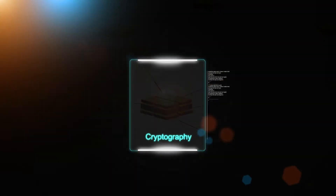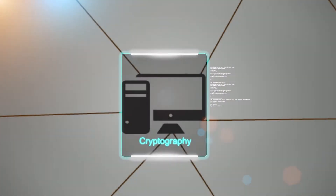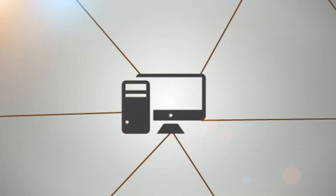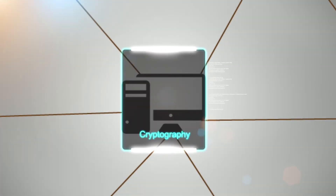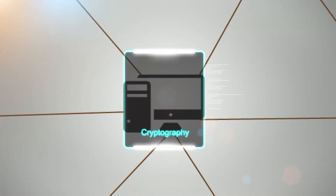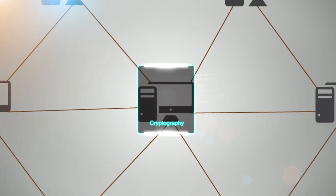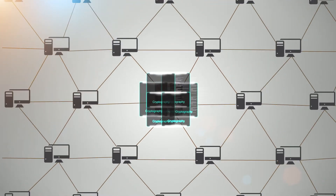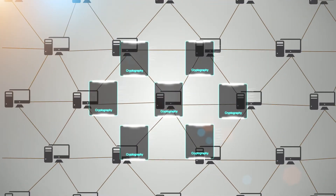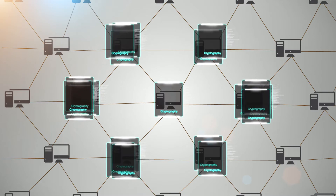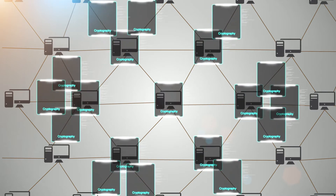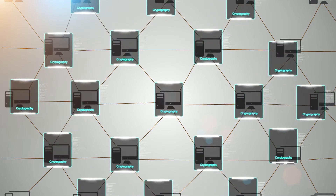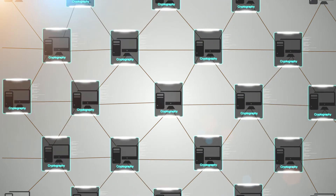The joined blocks are then posted to several independent computers within the network where storage of information occurs. The independent computers operate on a consensus model, ensuring all participants of the network have the same information at any given time.